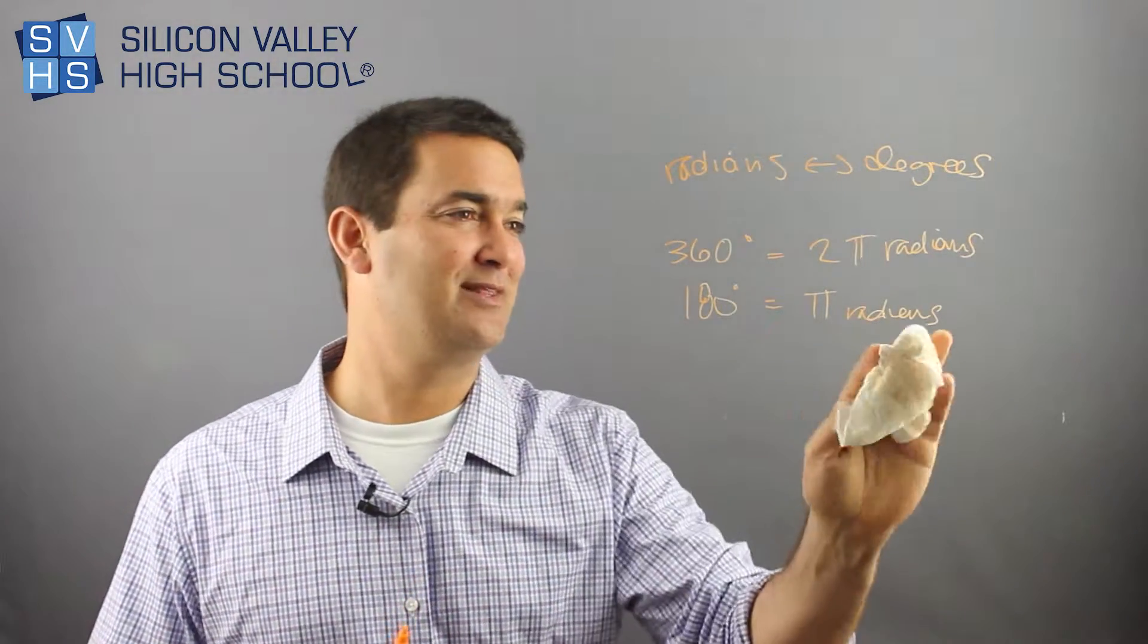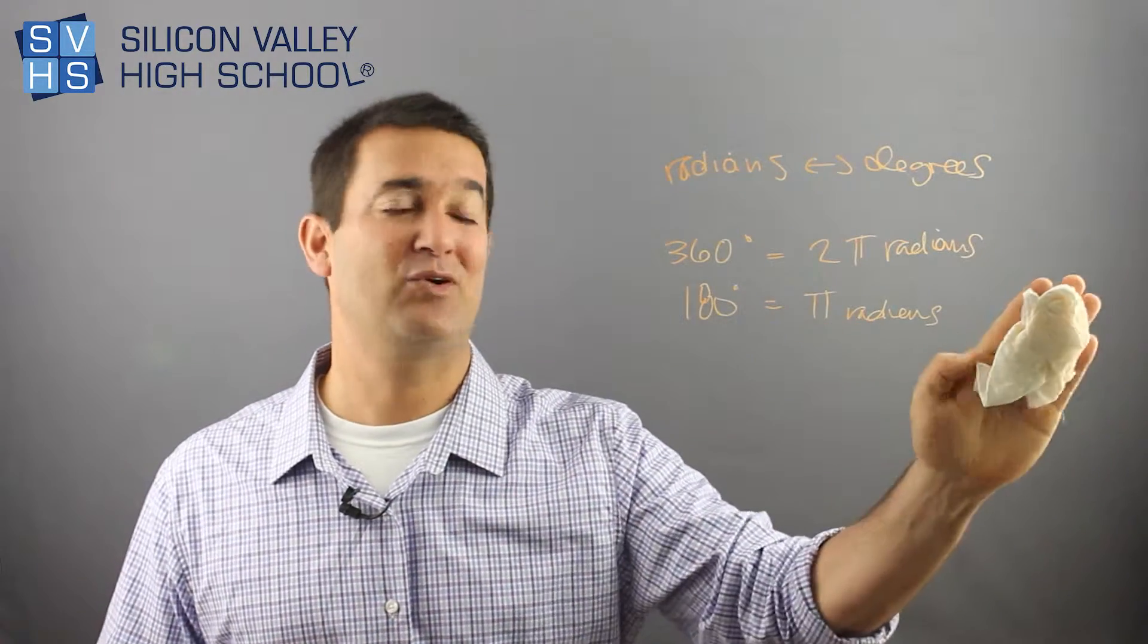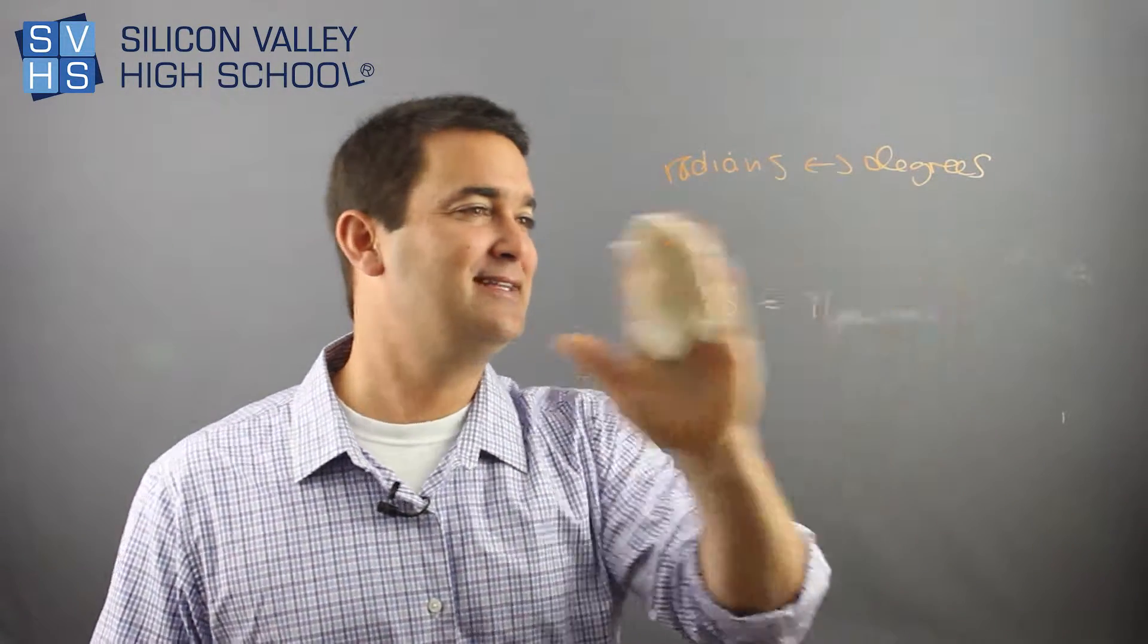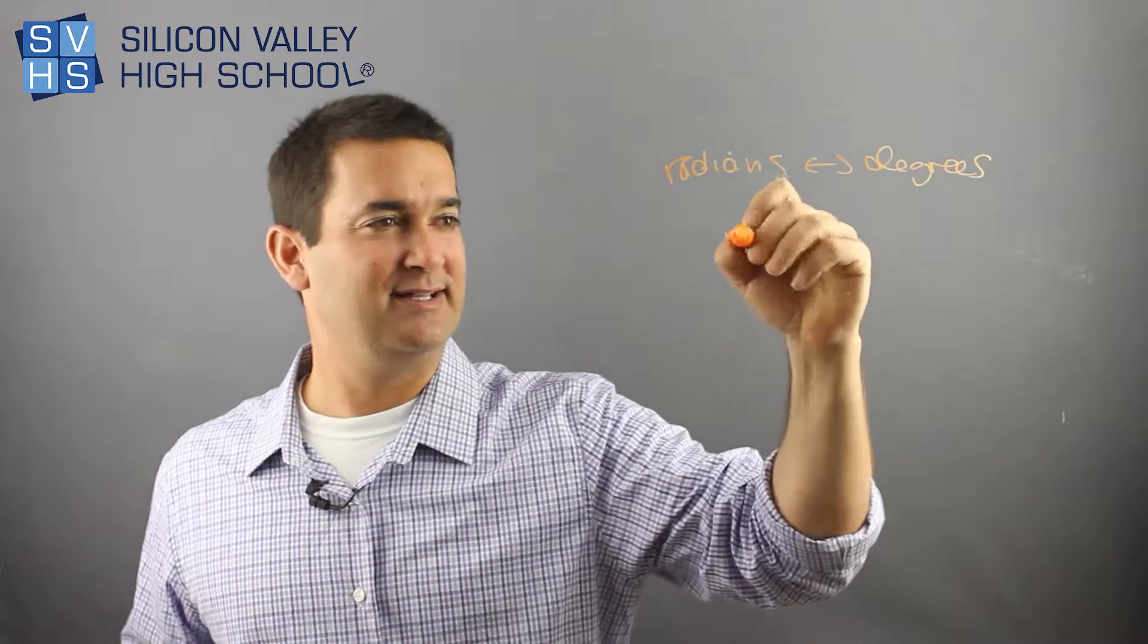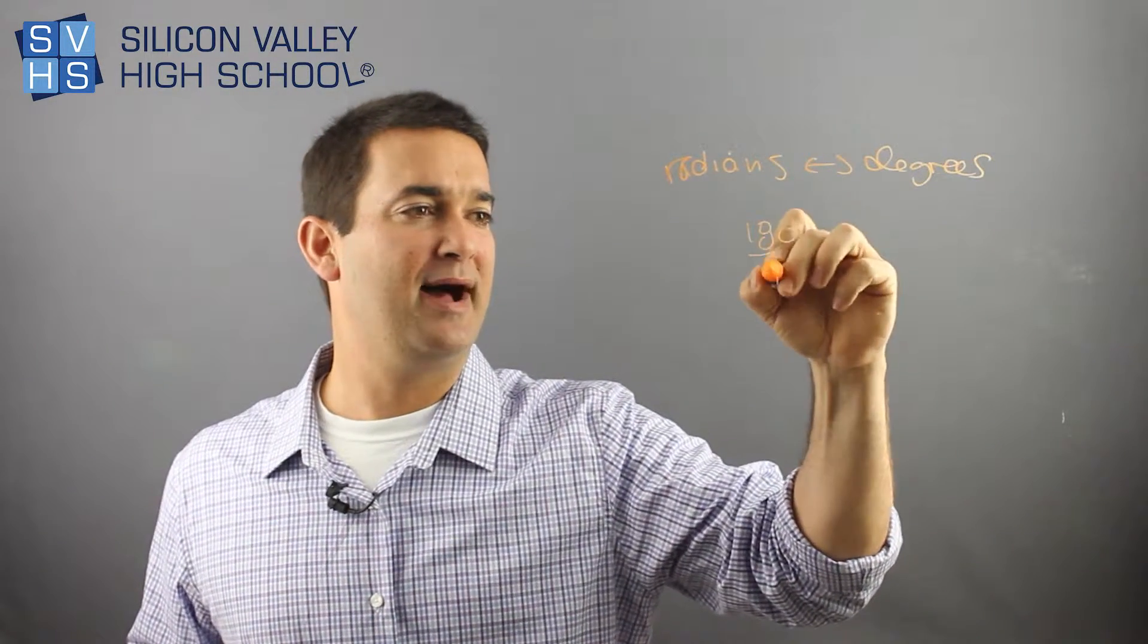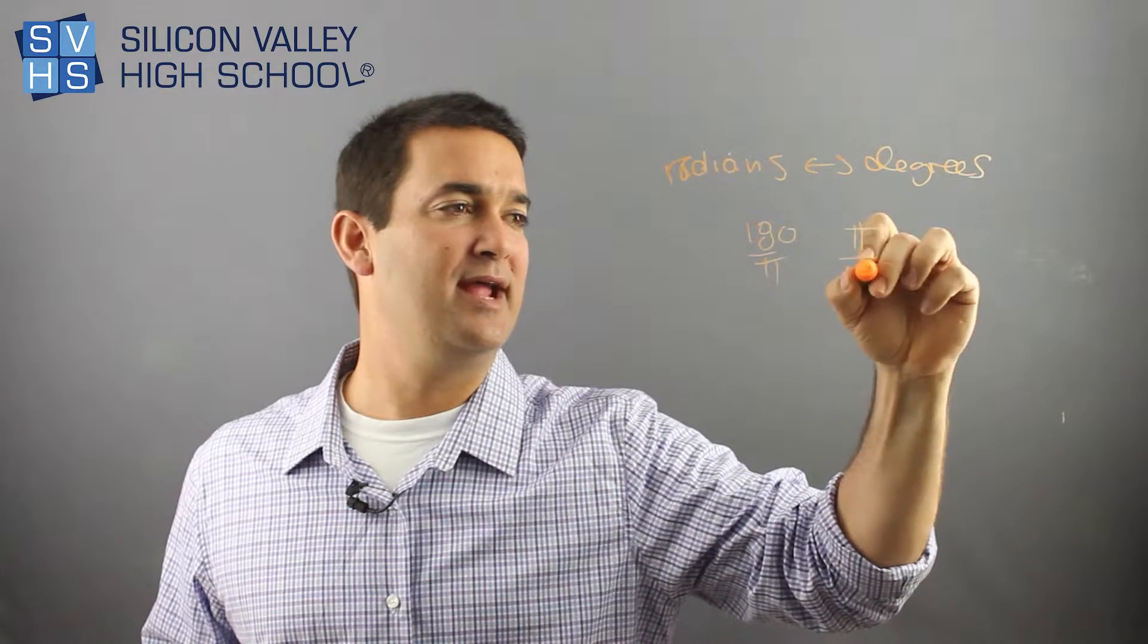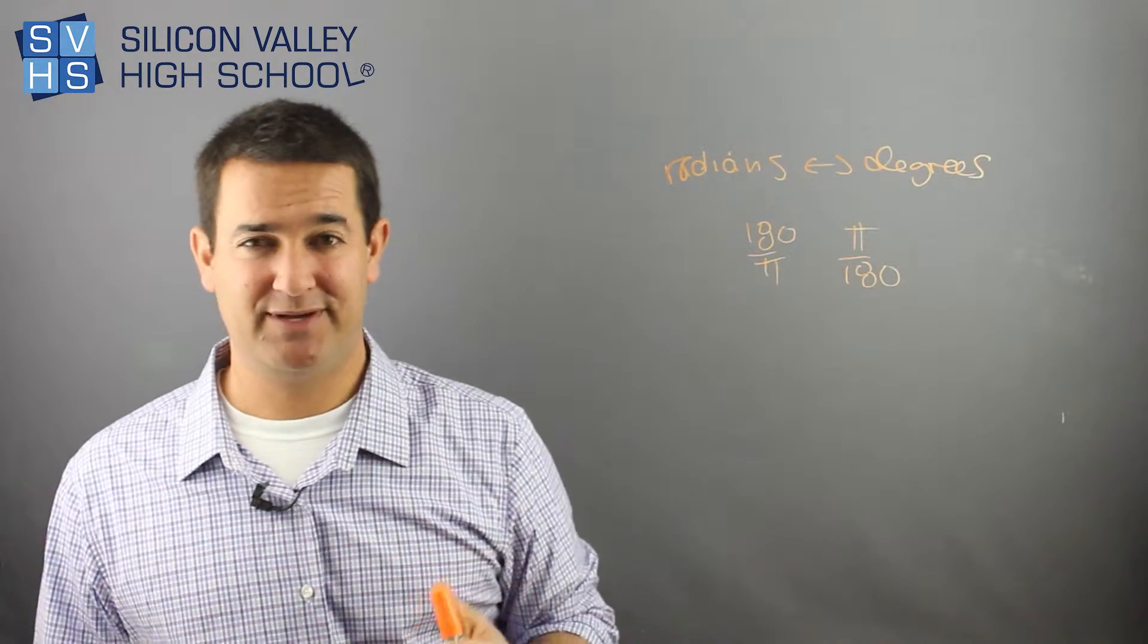But that doesn't help us with, I mean, that's the basic. But now let's talk about converting actual radians into degrees and vice versa. The thing to know is this: It's either 180 over pi or pi over 180. And I used to confuse them all the time. So here's how you know.